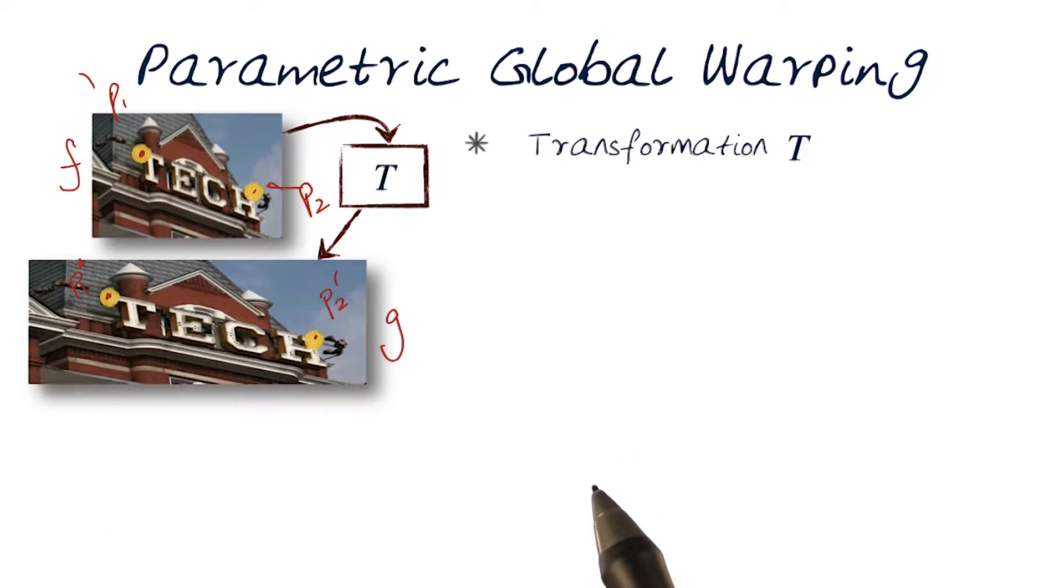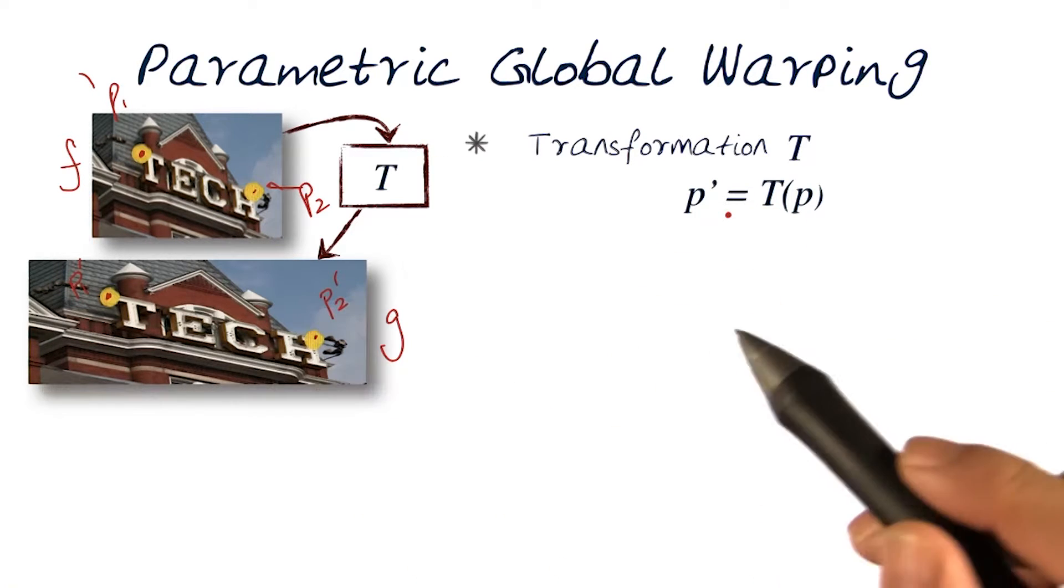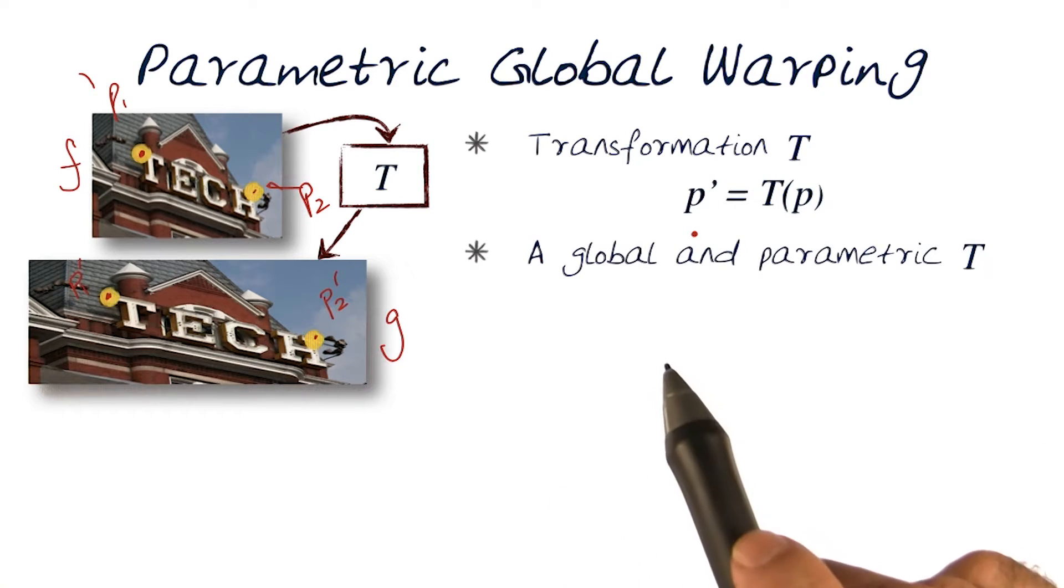So in essence, what we have to figure out is how to transform the point p to p prime. What we need now is a simple function that takes any point p. In this case, they would have values of x and y to generate a new point p prime.